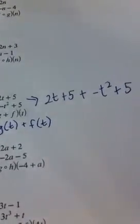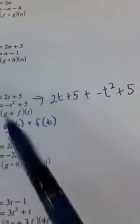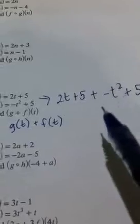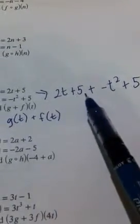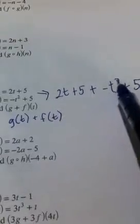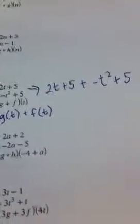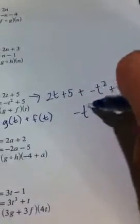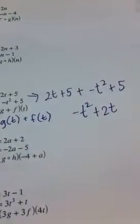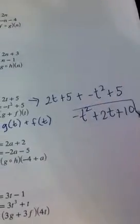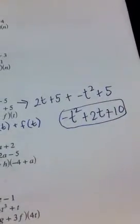You're taking the G function, which is 2T plus 5, and you're adding the F function, which is negative T squared plus 5. Combine like terms. I only have one T squared and only one T, but I have two fives, which when I add them gives me 10. And that's it.